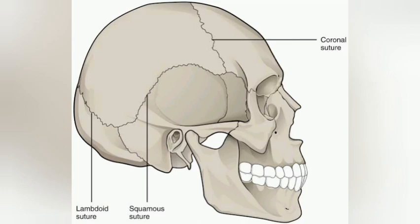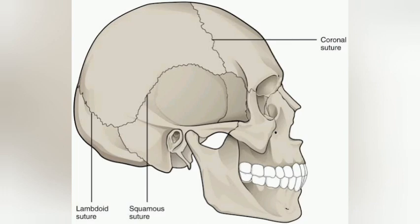The three most important suture joints are: first, the coronal suture. That is the joint that exists between the frontal bone and the two parietal bones. It's like the level where kings and queens wear their crown — that is where this suture is, which is how I remember it. So it is the coronal suture: the joint between the frontal bone and the two parietal bones.